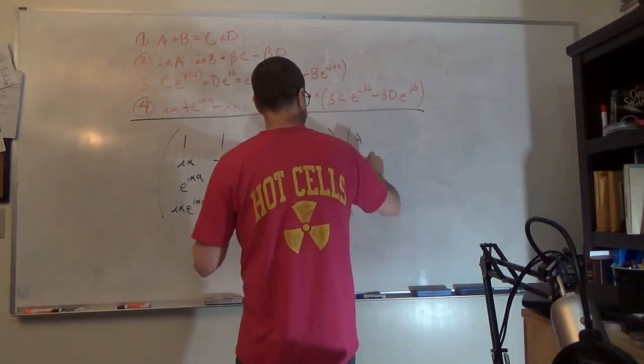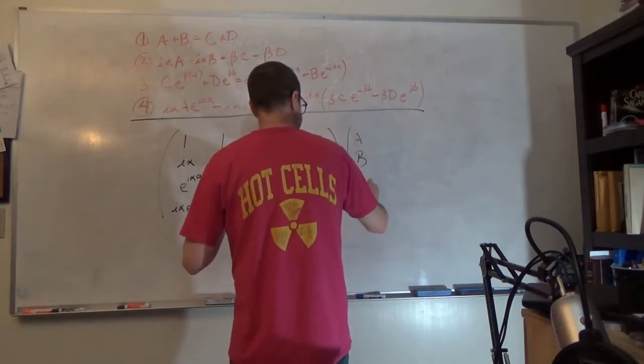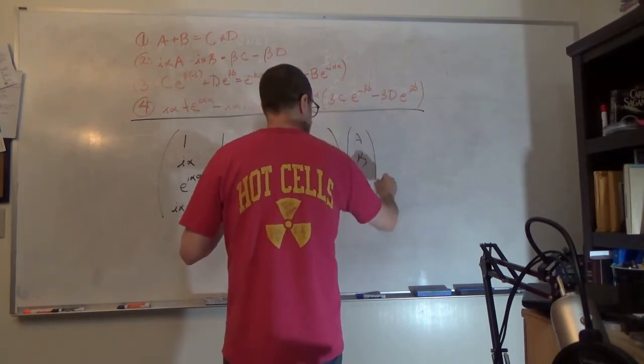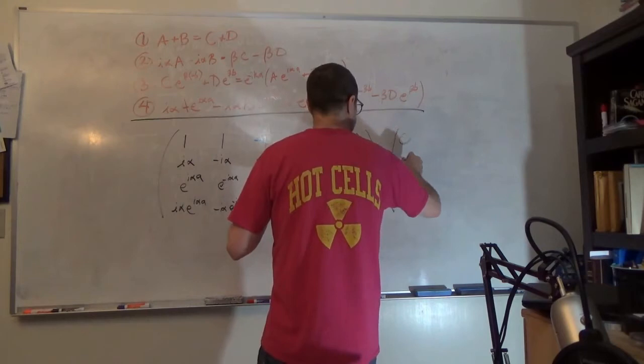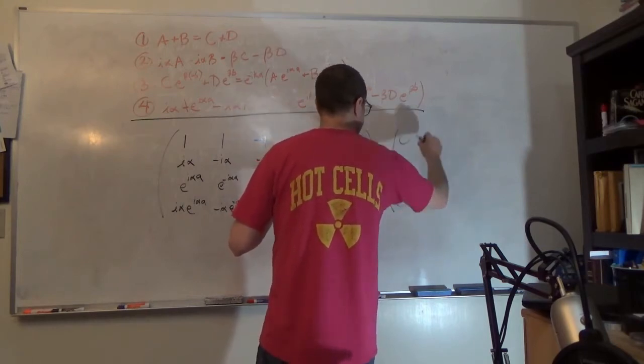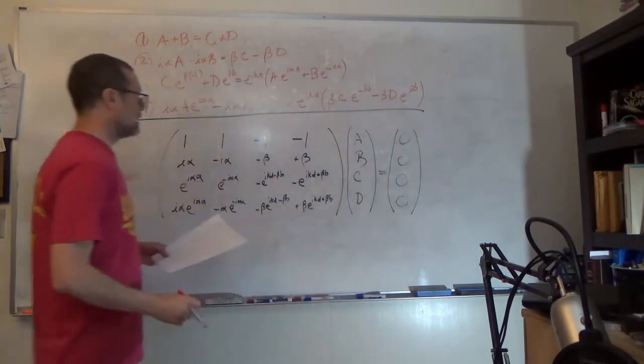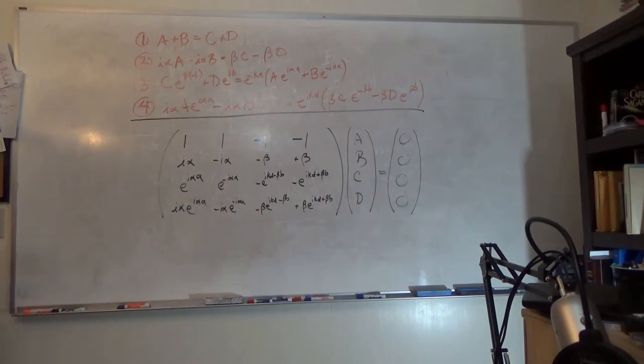Times the vector a, b, c, d equals 0, 0, 0, 0. That's our problem to solve.